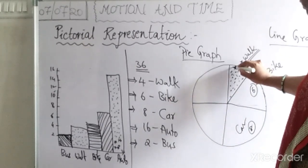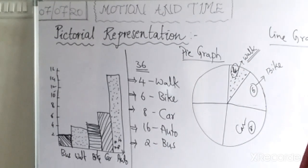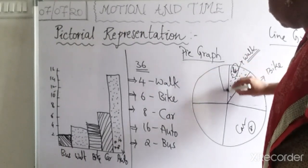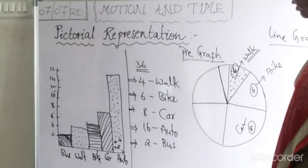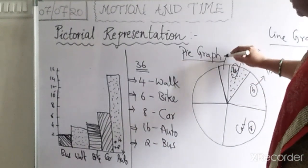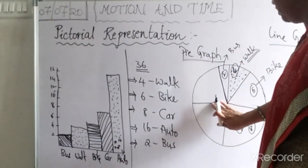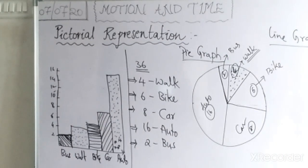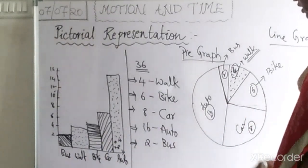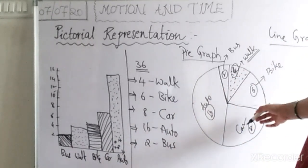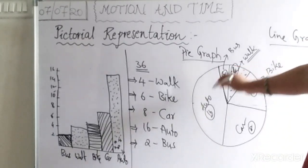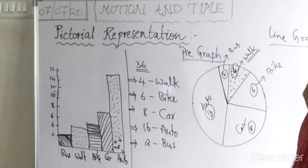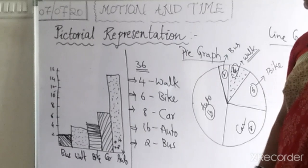By bike 6 students, by walk 4 students. By bus, 2 members attend school — draw a line for that segment using a scale. The remaining 16 students come by auto. After drawing, verify: 2 plus 4 is 6, plus 6 is 12, plus 8 is 20, plus 16 is 36. All 36 students are accounted for. Give different bright colors — blue, red, yellow, green, violet — to each segment so you can understand the concept clearly.